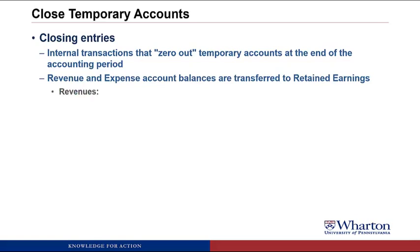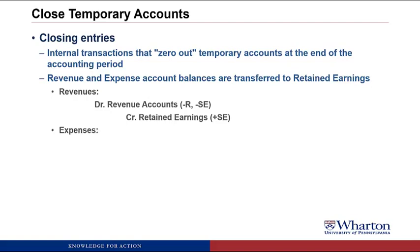The actual closing entries are internal transactions that zero out temporary accounts at the end of the accounting period. The goal is to transfer the balances in the revenue and expense accounts into retained earnings. For revenues, we debit the revenue accounts to zero them out — since revenue accounts have credit balances — and then credit retained earnings, which moves the balance from revenue into retained earnings. For expenses, which have debit balances, we credit them to zero them out and debit retained earnings. In both cases, we're not creating any new stockholders' equity; we're just transferring it from temporary accounts to the permanent account, retained earnings.